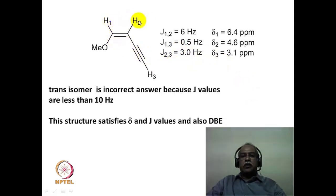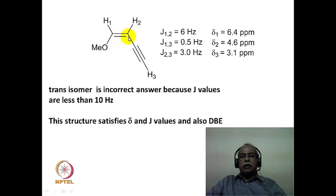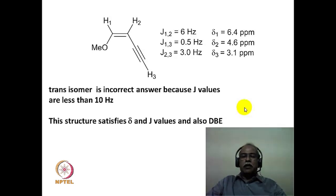The chemical shift values of the olefinic hydrogens are also consistent: the lone pair of the methoxy group can delocalize onto the adjacent carbon (enol ether type), making the beta carbon electron rich. Therefore, that beta hydrogen comes at a more shielded region of lower delta value, while the alpha hydrogen directly on the oxygen-bearing carbon comes at the highest delta value of 6.4 ppm. The beta position gives 4.6 ppm, and the acetylene hydrogen — the most shielded — comes at 3.1 ppm. This confirms the structure in terms of delta values, J values, and double bond equivalence, illustrating how to logically solve the structure of such a compound.